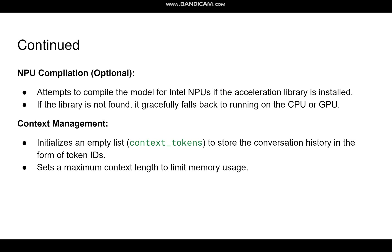Then we move into NPU compilation mode — this is the primary thing we are attempting to do. The code attempts to compile the model on Intel NPU if the acceleration library is installed, and can fall back to CPU or GPU if the Intel NPU is not available. For context management, we initialize an empty list to store the conversation history as token IDs, with a maximum length limit for memory usage.